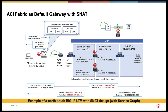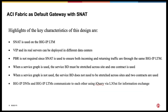The first design option is ACI Fabric as default gateway with SNAT. In this design option, ACI Fabric is the default gateway of the real servers, and SNAT is used on the Big IP LTM to ensure both directions of traffic go through the same Big IP LTM in the same data center. Some highlights include: SNAT is used on the Big IP LTM; VIP and its real servers can be deployed in different data centers; PBR is not required since SNAT ensures both incoming and returning traffic go through the same Big IP LTM. This design can be deployed with or without a service graph.